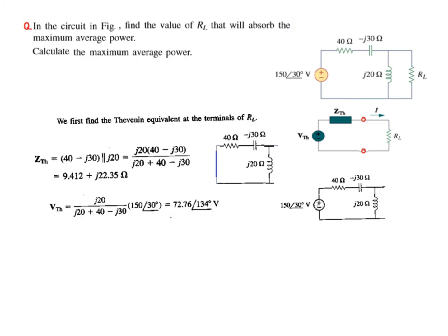We have V_Thevenin, but we need to find the current because for power we need I squared R_L. In this case, R_L equals the magnitude of Z_Thevenin. Taking the magnitude gives us R_Thevenin squared plus X_Thevenin squared under root, which equals 24.25 ohms. Now we need to find the current.